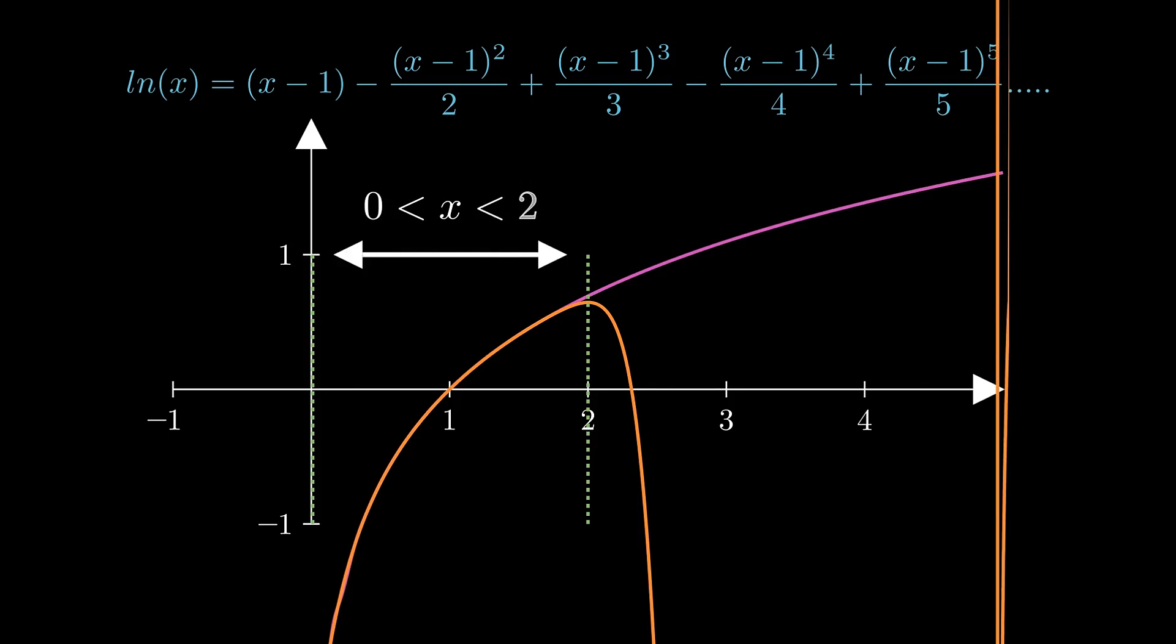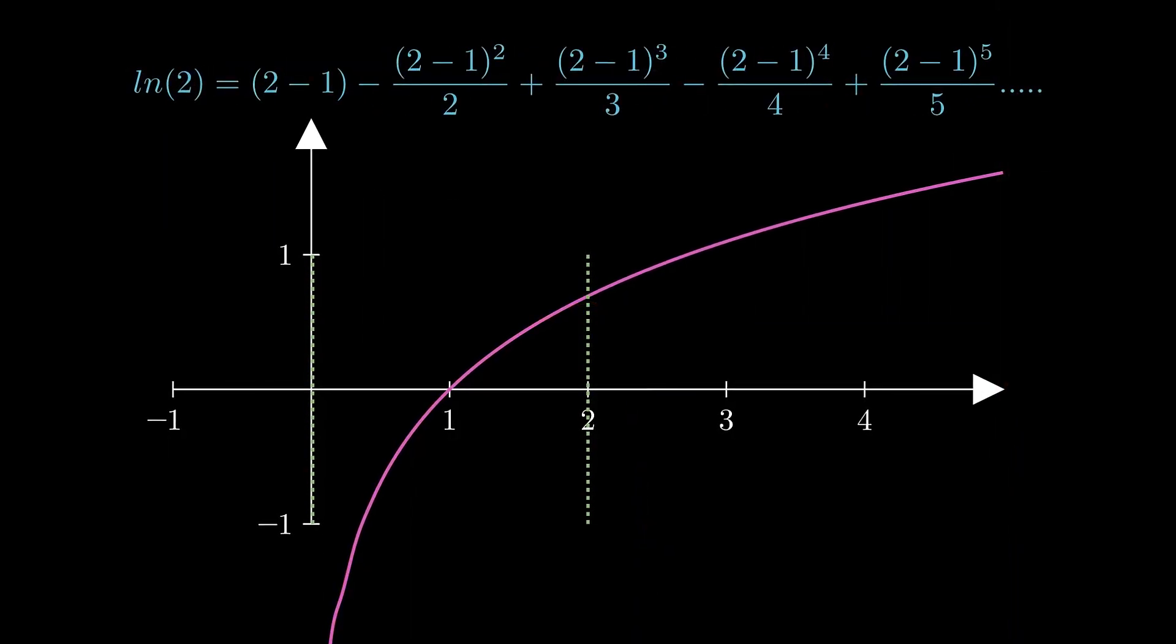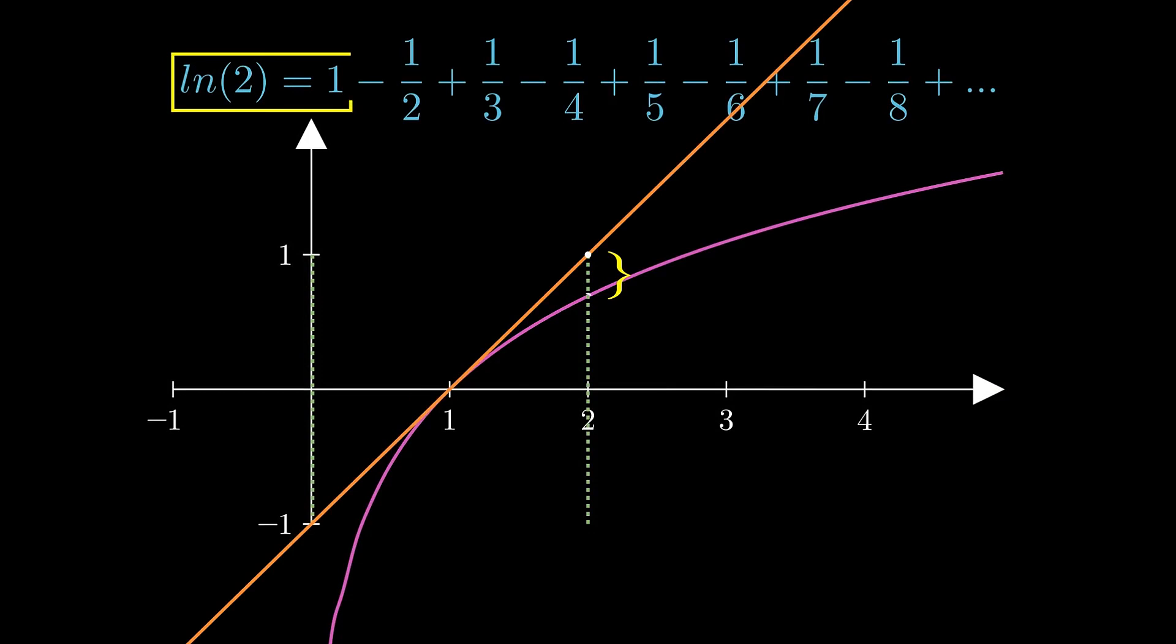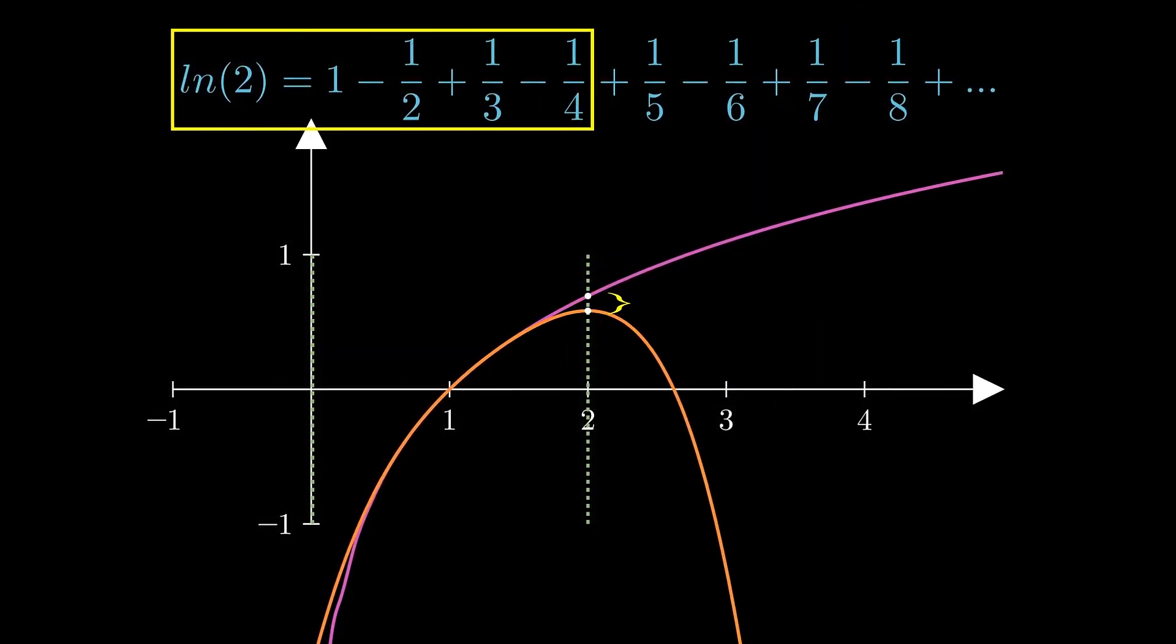If we plug in x equals 2, we get an alternating harmonic series. You can see the series getting closer and closer to natural log of 2 as we keep adding the terms.